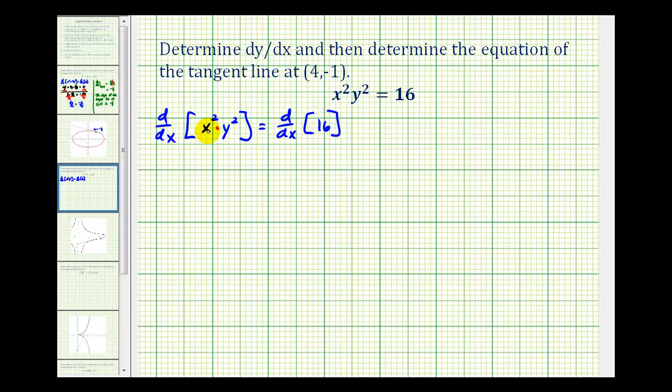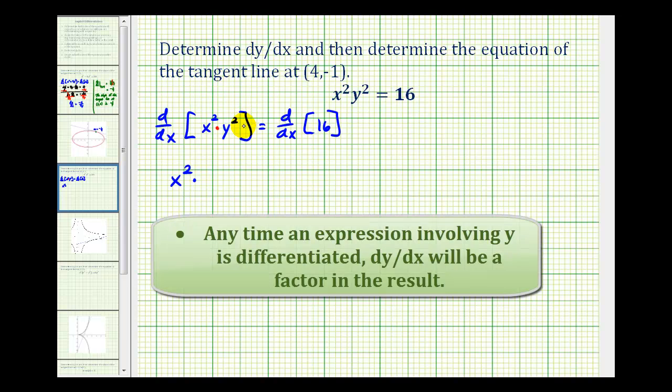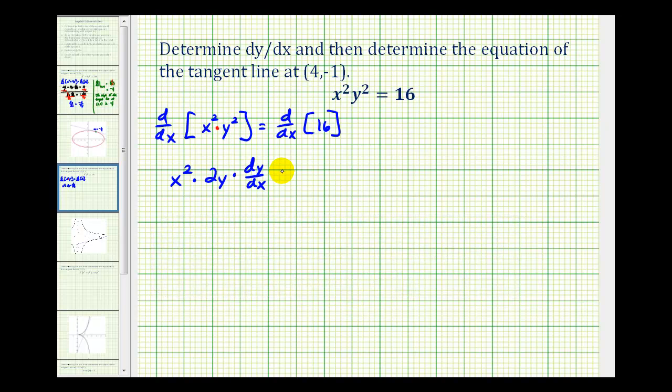So we'll have the first function x squared times the derivative of the second. Well, the derivative of y squared is going to be 2y times dy/dx. Remember, since the term involves y, we do have to apply the chain rule to determine the derivative with respect to x. Plus the second function, which is y squared, times the derivative of the first function, which would be 2x, equals the derivative of 16, which would be zero.